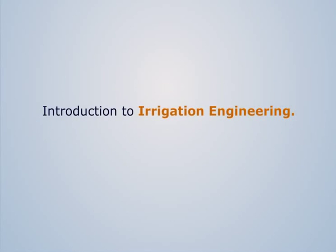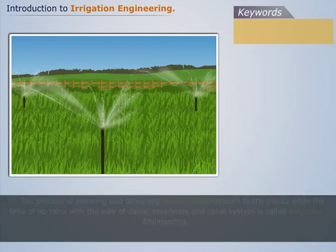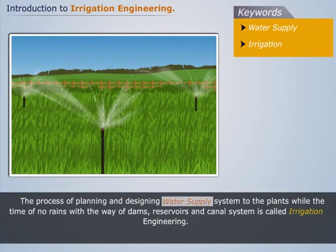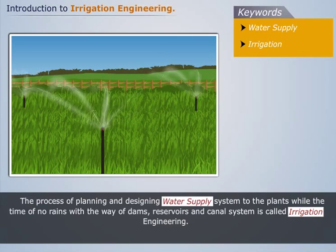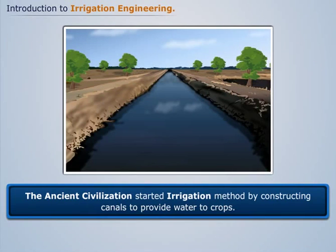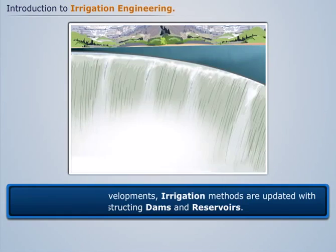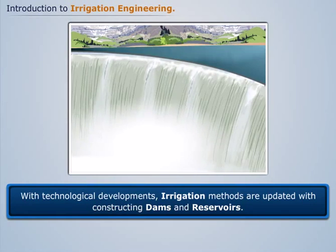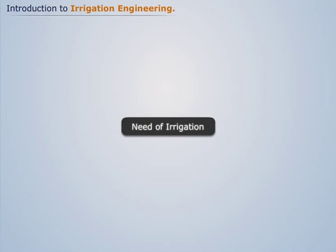Introduction to irrigation engineering: the process of planning and designing a water supply system for plants during times of no rains, using dams, reservoirs, and canal systems. Irrigation is defined as the method of providing water to plants artificially. Ancient civilizations started irrigation by constructing canals to provide water to crops, and with technological developments, irrigation methods have been updated with the construction of dams and reservoirs.